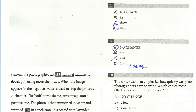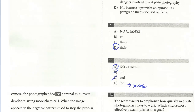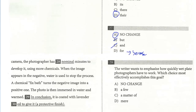Question 28 is a diction question. Once the photo is snapped, the photographer has 'nominal' minutes to develop it using more chemicals. You really want to say he just has a few minutes, so it's important he processes this expeditiously. 'Nominal' is not the correct word for 'nominal minutes.' We want to say just a few minutes — and we do see 'few' as a choice. But 'mere' emphasizes even more how crucial the time is and how few minutes the photographer has. Between 'few' and 'mere,' 'mere' is the better choice to convey urgency. The answer is D.